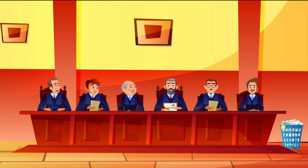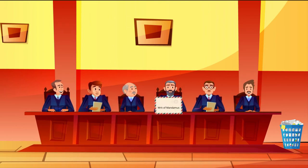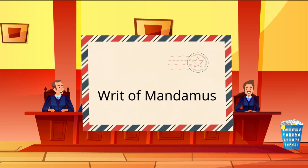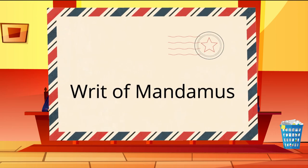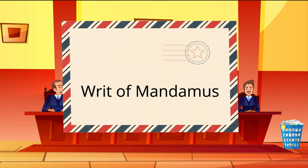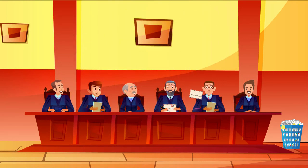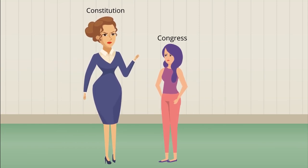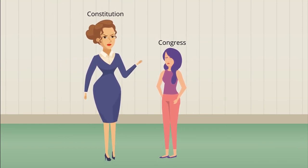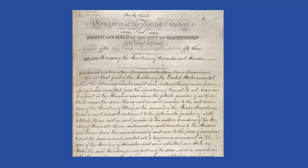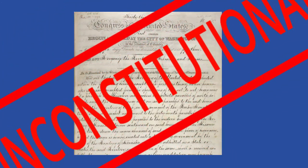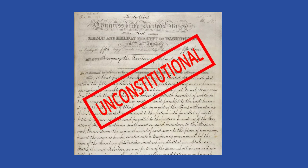Congress's Judiciary Act of 1789 gave the Supreme Court original jurisdiction to issue writs of mandamus, which are court orders that compel government officials to act according to the law. Since this power is not given to the Court in the Constitution, the Judiciary Act of 1789 contradicted the Constitution. Article 6 of the Constitution establishes it as the Supreme Law of the Land, so the Court ruled that an act of Congress contrary to the Constitution must be struck down, ruling the Judiciary Act of 1789 unconstitutional and establishing the Court's power of judicial review.